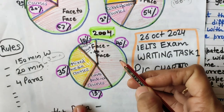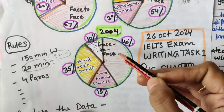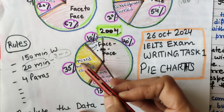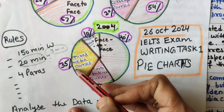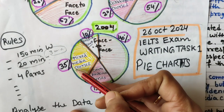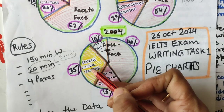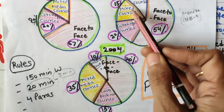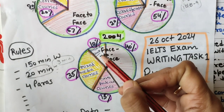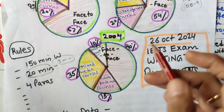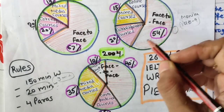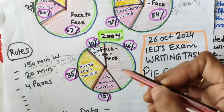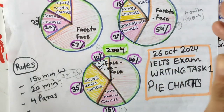The data is presented in percentages. In 2004, face-to-face at 40% remains the major course, while mixed media showed a dramatic improvement — rising from 13% to 15% to 35% — with more and more students enrolling. Correspondence declined from 11% to 10%. Online courses were newly introduced in 1994. Now we have analyzed all the data.